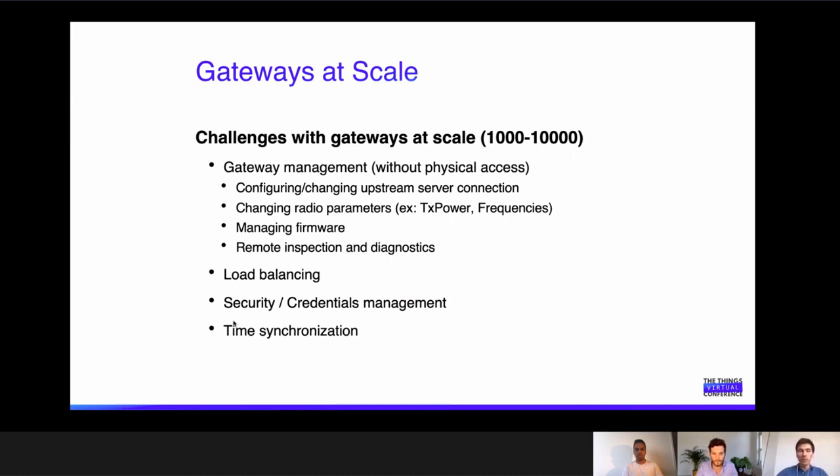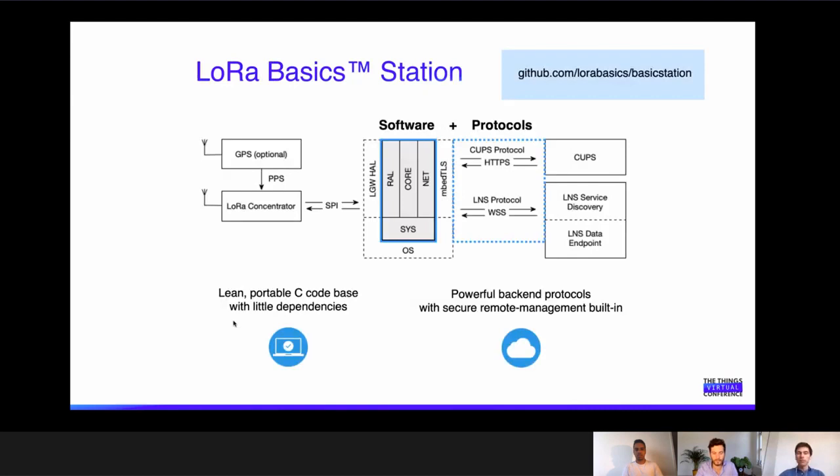Basic Station is an implementation of gateway software that provides base functionality to address these challenges that arise when you operate gateways at scale. It is not a simple packet forwarder — it has added features that address these challenges and provides base functionality to handle them.